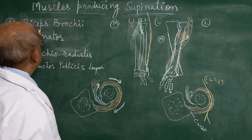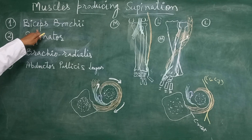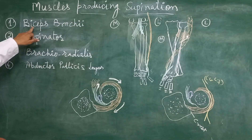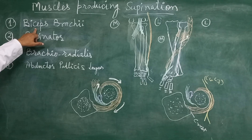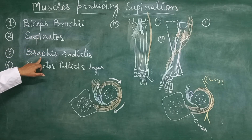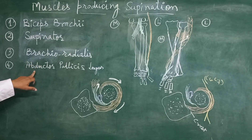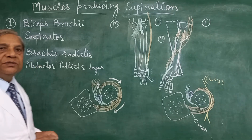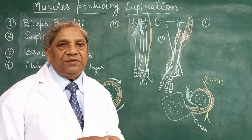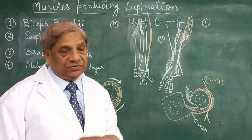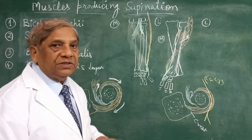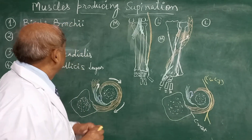Let us see the muscles which are responsible for the production of the supination movement. These are: the biceps brachii, the supinator muscle, the brachioradialis muscle, and the abductor pollicis longus. So these are the four muscles — some of them are strong supinators and some are weak supinators. We will learn about all these four muscles.